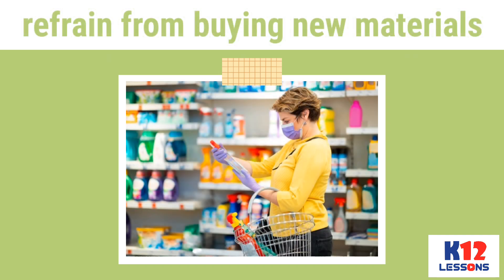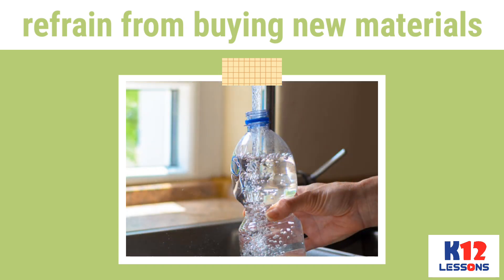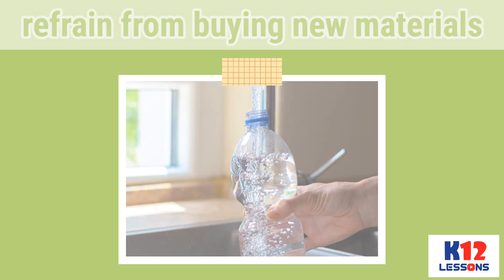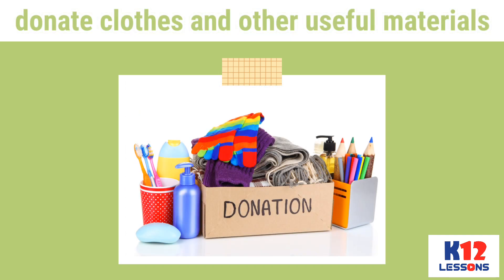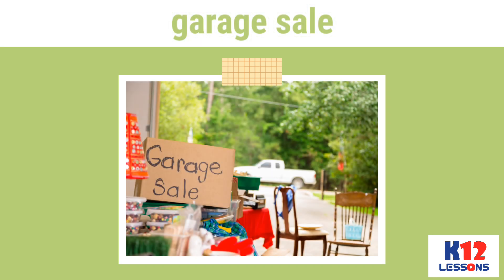Fourth, refrain from buying new materials when you still have supplies that can be reused. This way, existing materials with or without minor damage can be used again for the same or different purpose. For example, you can reuse water bottles as liquid containers. Fifth, donate clothes and other useful materials to organizations that conduct relief operations during calamities. Sixth, conduct a garage sale — not just for clothes, but for other items that can still be reused.